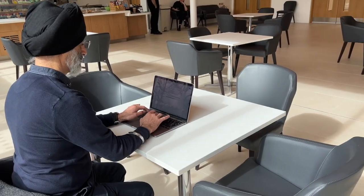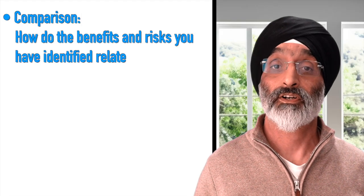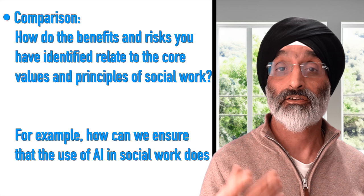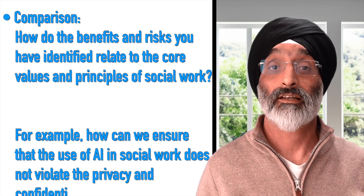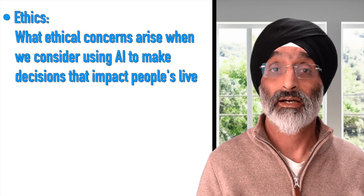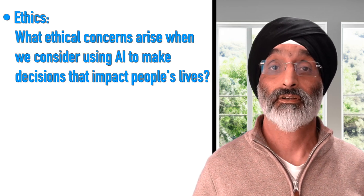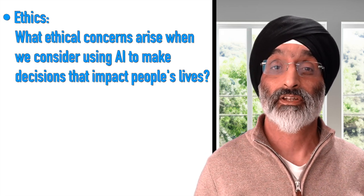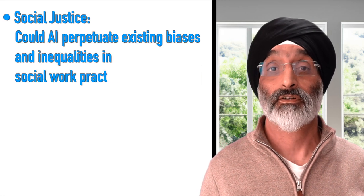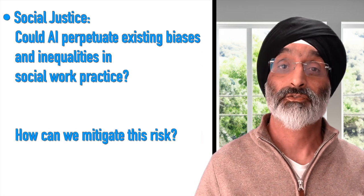I would make sure I prepare some facilitation prompts. For example, comparison: how do the benefits and risks you've identified relate to the core values and principles of social work? How can we ensure that the use of AI in social work does not violate the privacy and confidentiality of clients? Ethics: what ethical concerns arise when we consider using AI to make decisions that impact people's lives? For example, how can we ensure that AI systems are not biased against certain groups of people? Social justice: could AI perpetuate existing biases and inequalities in social work practice? How can we mitigate this risk?